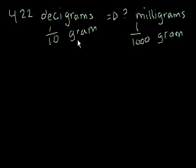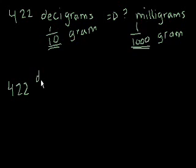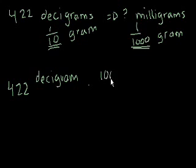So there's two ways of doing this. We can convert to grams and then convert to the other unit. That sometimes makes things easy. Or we could say, well, how many milligrams is equal to 1 decigram? Well, a milligram, as we see here, is 100 times smaller. To go from 1 tenth to 1 over 1 thousand, you have to decrease in size by 100. So we could just say 422 decigrams times 100 milligrams per decigram.